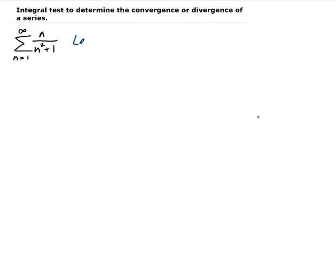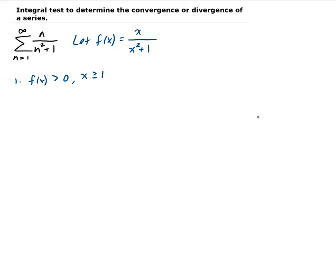Let f(x) be equal to x over x squared plus 1. The first condition: this function is positive. Since our summation is going from 1 to infinity, our condition requires x to be greater than or equal to 1. It is positive because since x is greater than or equal to 1, the function will always give you a positive value.